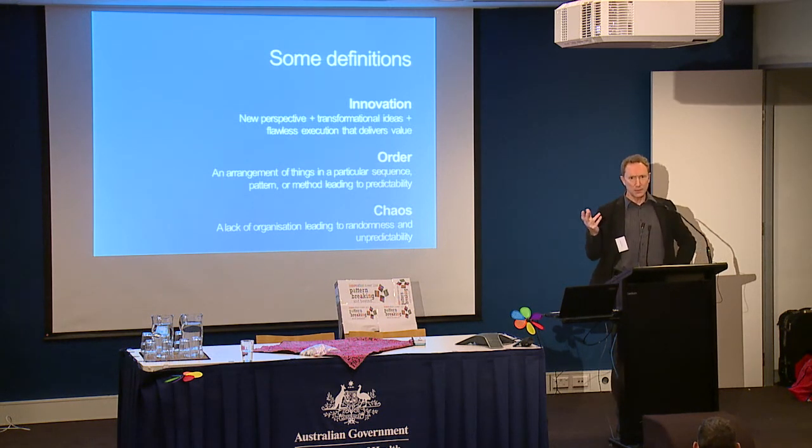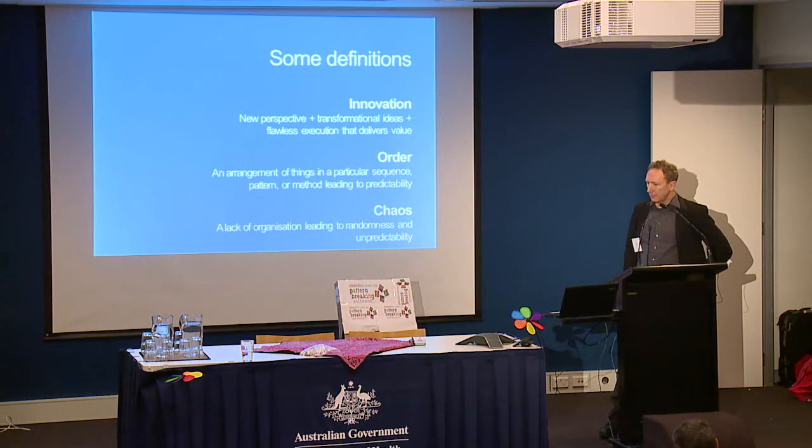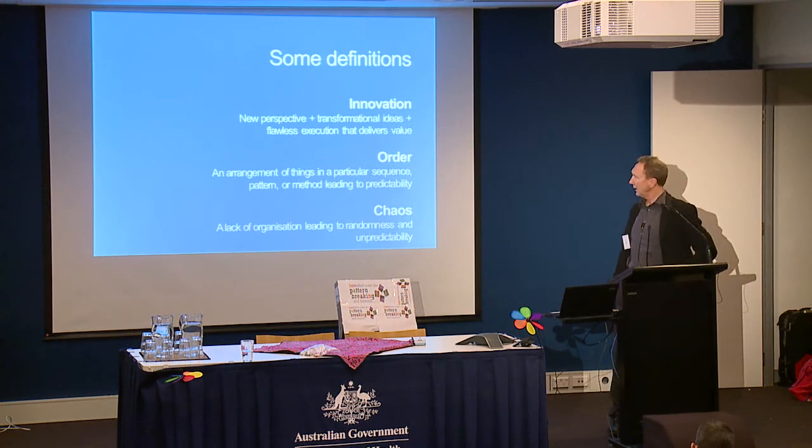The delivering value part is critically important. The question about the kiosk that didn't work — that website didn't deliver value. It delivered a broken website and an inability to report a traffic accident. And possibly when you've just had a fairly traumatic traffic accident, the thing you don't want is to be pointed at a kiosk in a police station. Value to the customer, value to other stakeholders — that value point is critically important. So those are just some working definitions and I'll be drilling into that innovation definition as we go through.